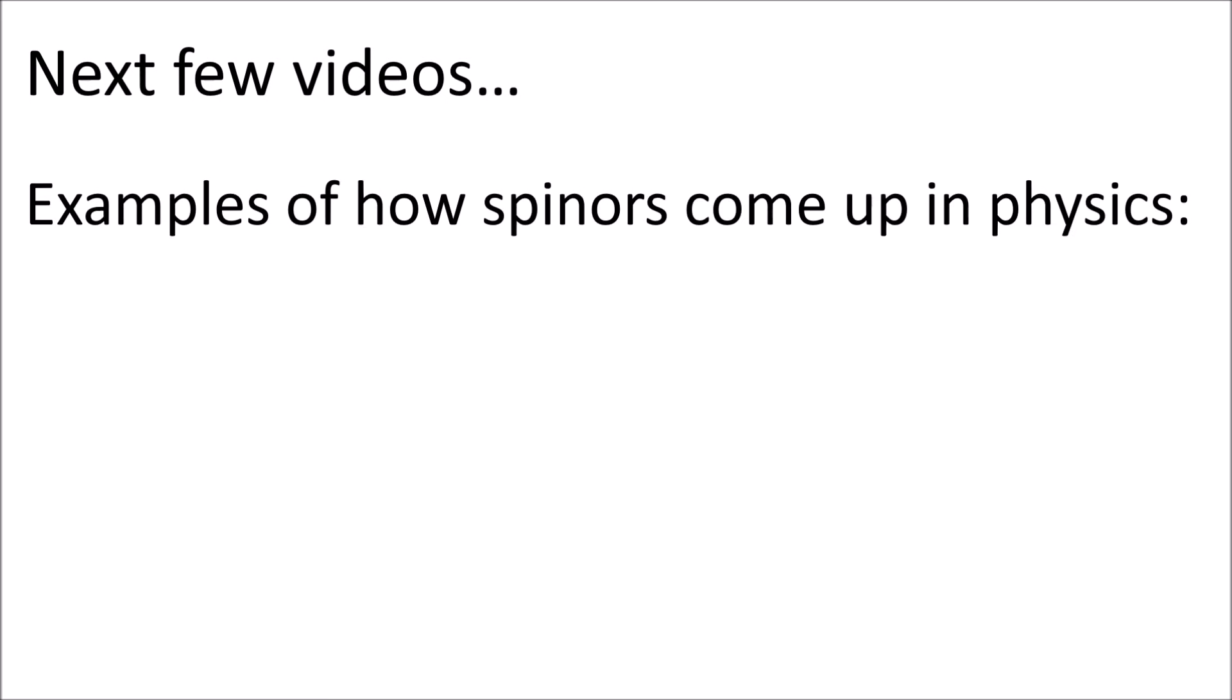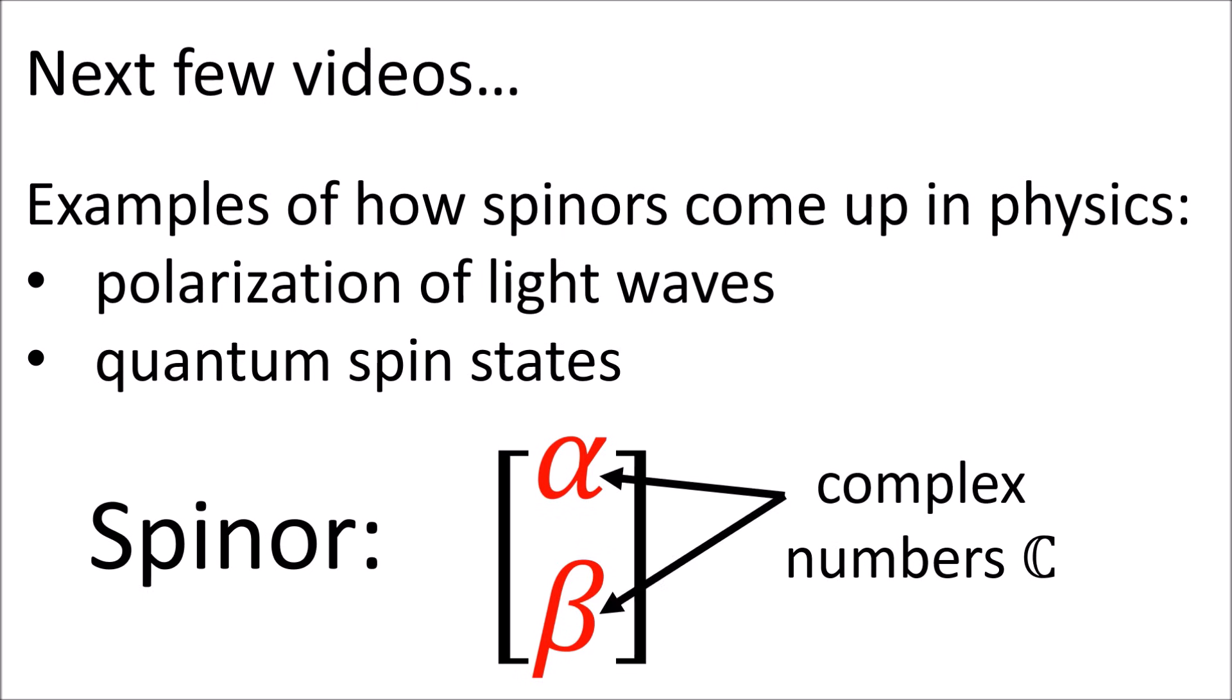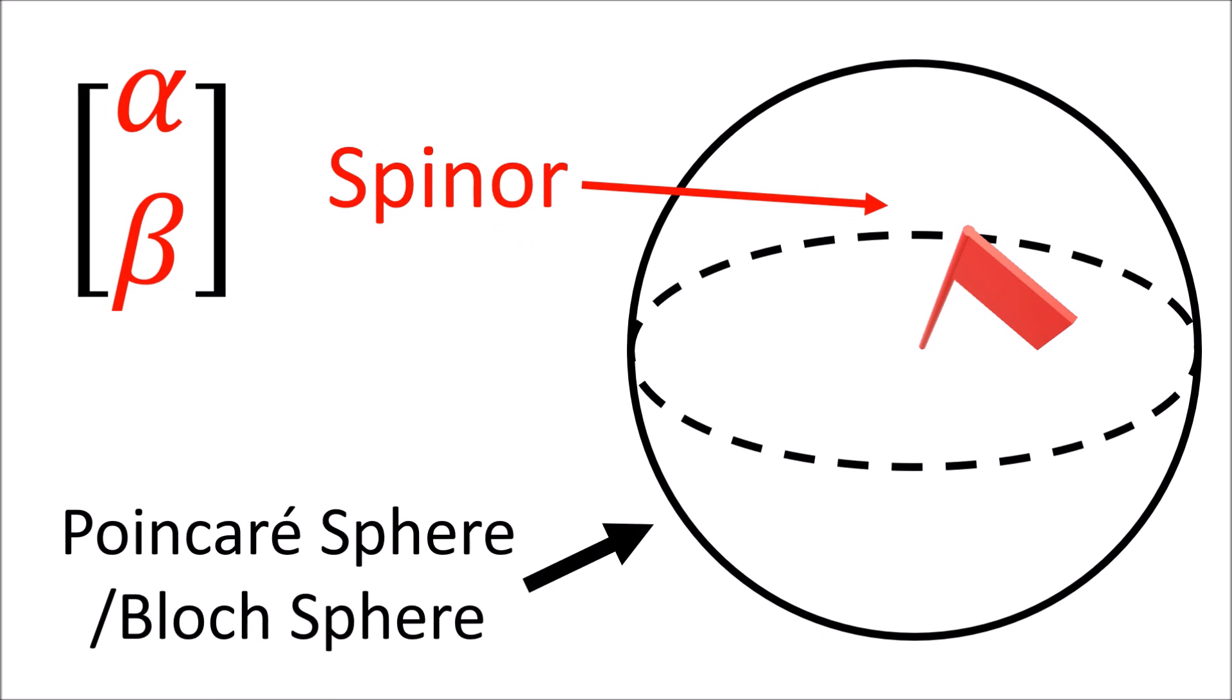In the next four or five videos I'm going to talk about two examples of how spinors come up in physics: the polarization of light waves and quantum spin states. We're going to find that both of these phenomena can be described by spinors in the form of two by one columns with complex number entries. Afterward we'll see how we can visualize these spinors as flagpoles on a sphere, called the Poincaré sphere or Bloch sphere.